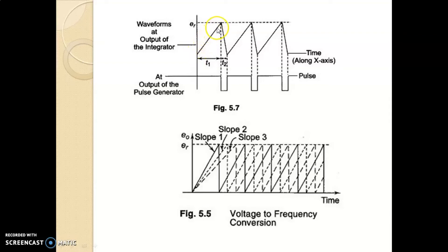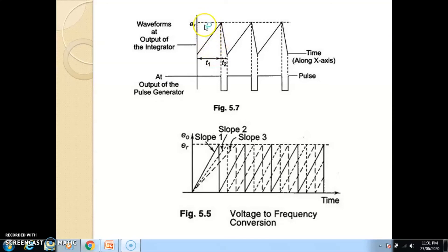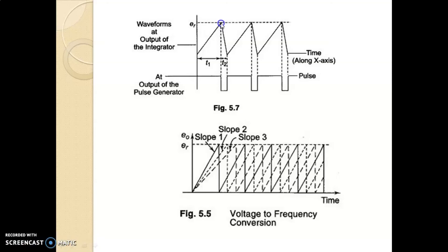At a certain point this ramp signal equals the reference signal. As soon as the ramp signal equals the reference signal, the output of the comparator will change state. At that point, the pulse generator generates a pulse. These generated pulses are again fed back to the integrator. In this case, the capacitor is already charged, but when the pulses from the pulse generator are applied to the integrator, the charged capacitor starts discharging.